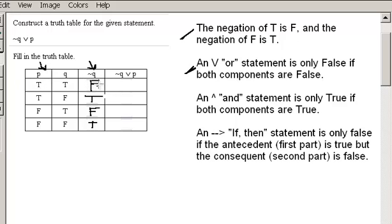Looking at P and NOT Q in the first row, one is true and the other is false, so that means that our resulting statement must be true.